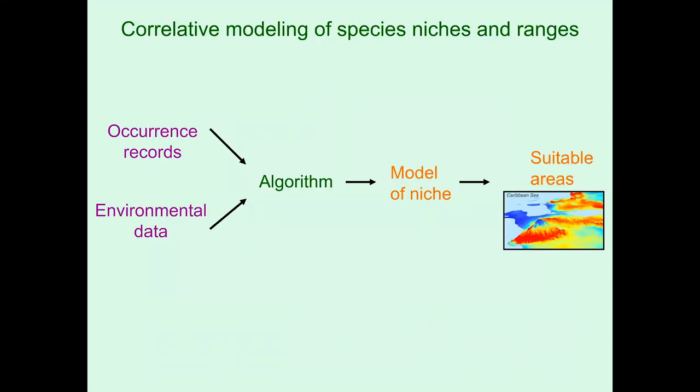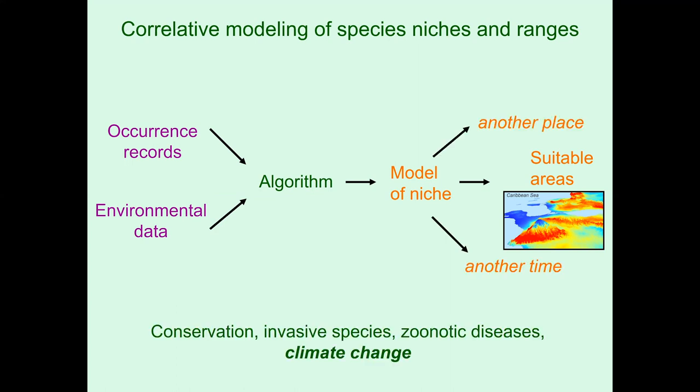As you have seen in many other lectures for this course, we're using two kinds of input data and the many algorithms available to somehow form a model of the species niche, or at least its environmental associations, that can then be applied to geography to identify suitable areas for species. These models can be applied in other places and times, which leads to many applications in conservation, invasive species, zoonotic diseases, and climate change.